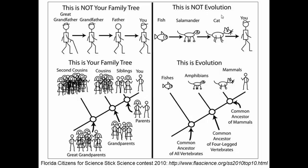Evolution of species works the same way. We don't think of fish evolving into salamanders evolving into cats evolving into us. Rather, it's best represented with a branching diagram: we are closely related to other mammals because we share a common mammal ancestor, and mammals are more closely related to amphibians because they share a common four-legged vertebrate ancestor. Chimps are not our ancestors — they are relatives on a tree. Phylogenetics is the field of studying these diagrams to understand evolutionary history.